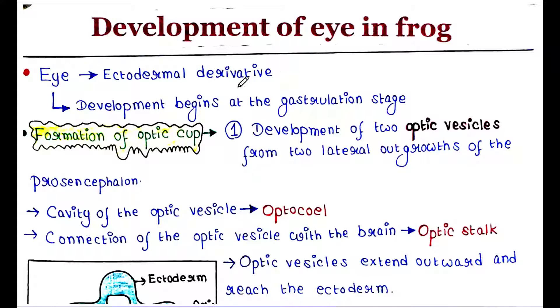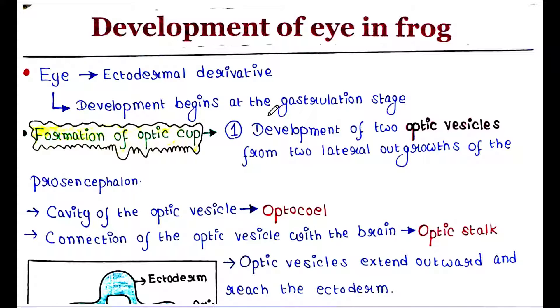The eye is an ectodermal derivative, which means the eye gets formed from ectoderm. The development of the eye begins at the gastrulation stage.